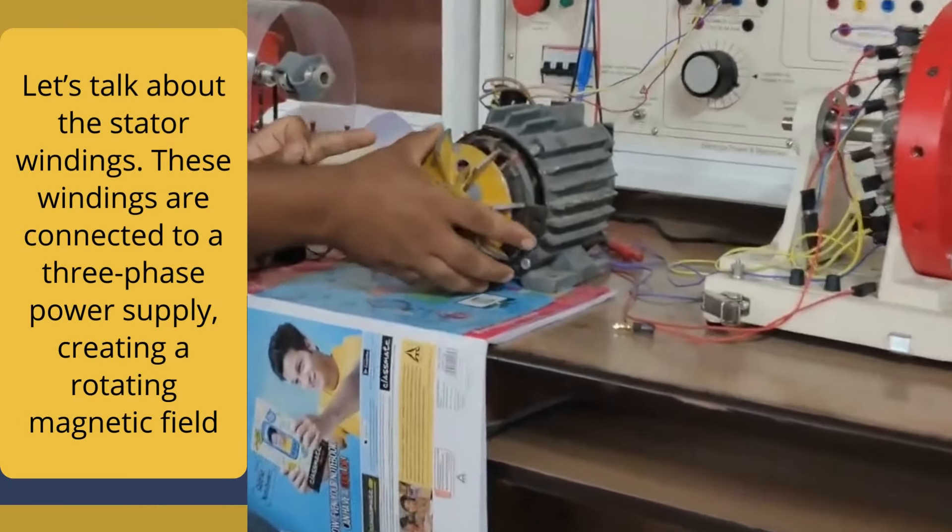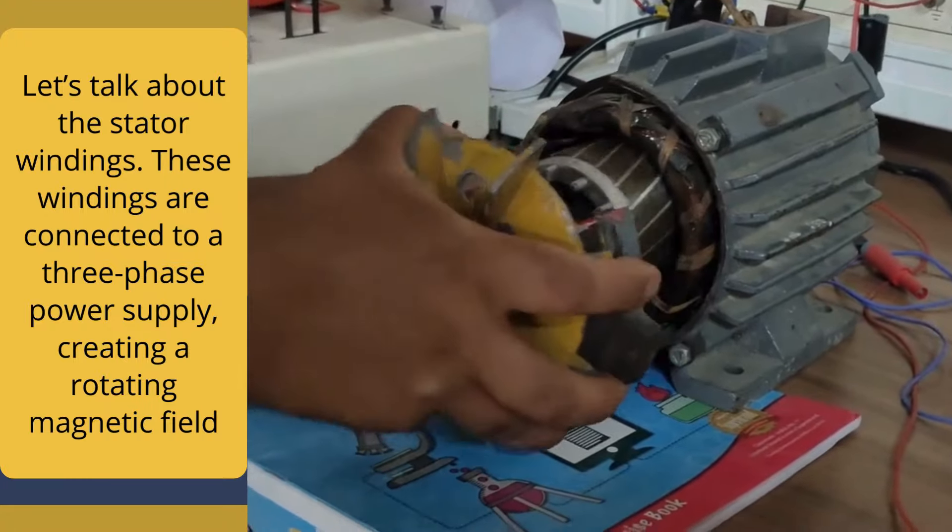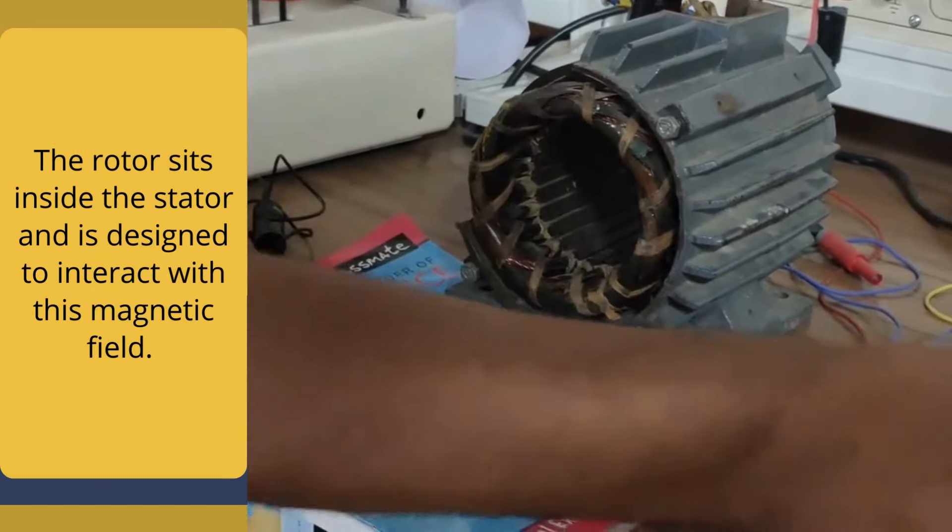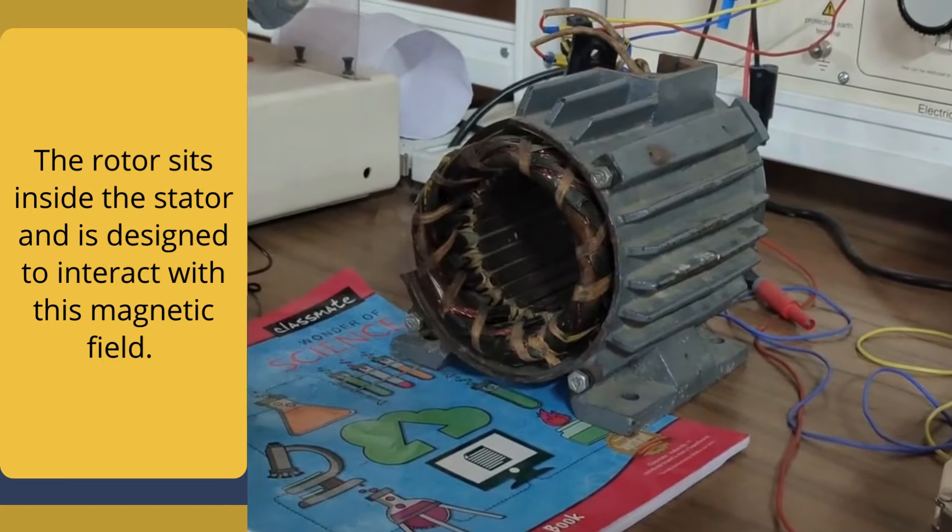Let us talk about the stator winding. These windings are connected to a three-phase power supply, creating a rotating magnetic field. As you can see, the rotor sits inside the stator and is designed to interact with the magnetic field.